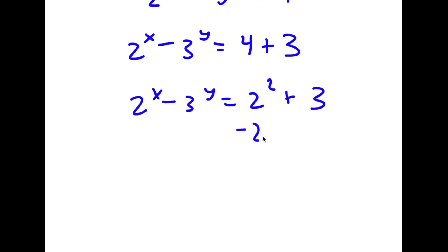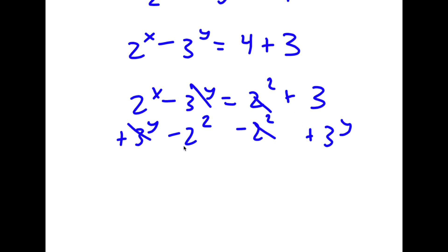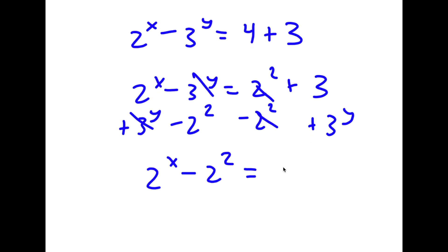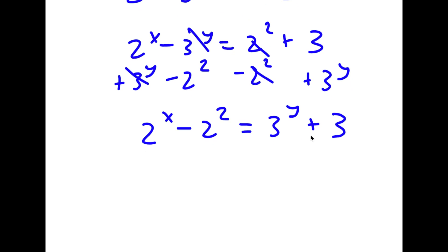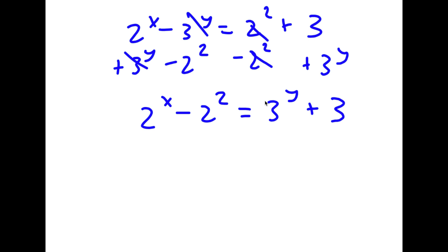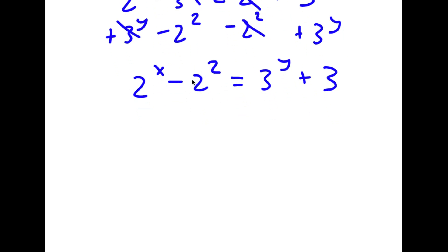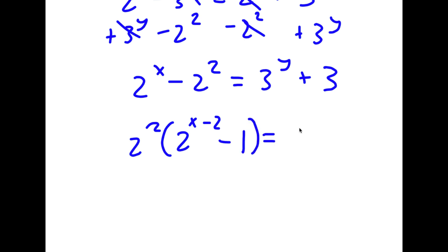Now I'm going to subtract 2 squared on both sides and add 3^y on both sides. These terms cancel, leaving 2^x minus 2 squared equals 3^y plus 3. I factor out 2 squared from the left side to get 2 squared times (2^(x-2) minus 1), and factor out 3 from the right to get 3 times (1 plus 3^(y-1)).